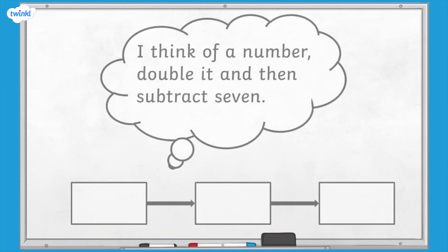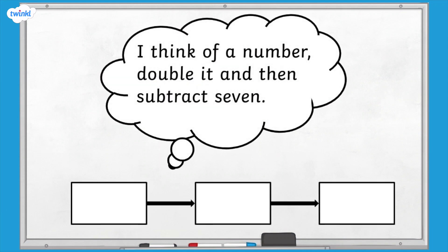I think of a number, double it, and then subtract seven. What expression could we use to represent this? My number is unknown so we would use x to represent it. First I double the number so we could call this 2x, and then subtract 7. So my expression is 2x subtract 7.